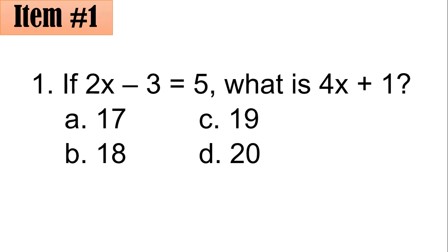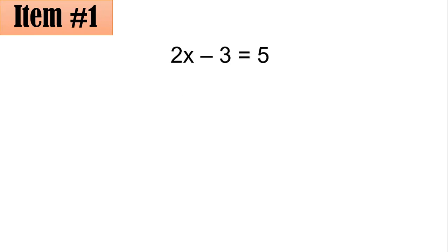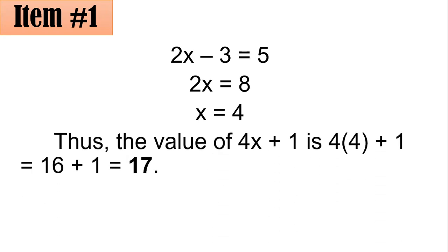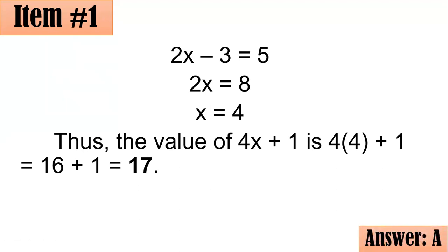For the solution: if 2x minus 3 equals 5, adding 3 to both sides gives us 2x equals 8. Dividing both sides by 2, x equals 4. However, this is not yet our final answer because we are looking for the value of 4x plus 1. Substituting x with 4, we have 4 times 4 plus 1, which is 16 plus 1. The correct answer is 17, which is letter A.